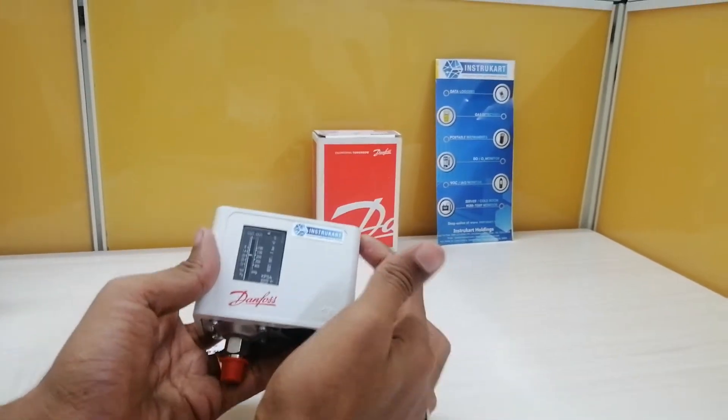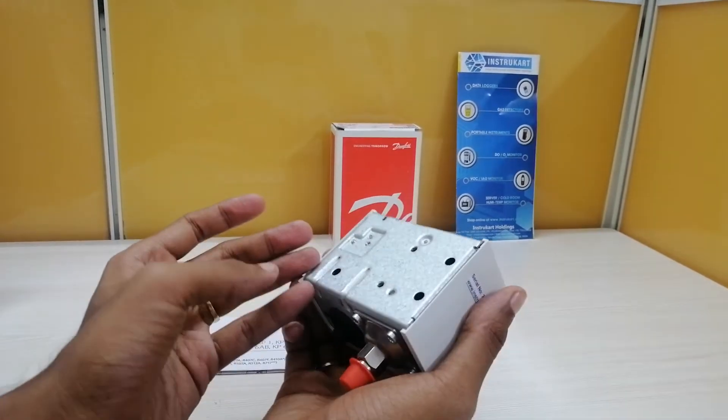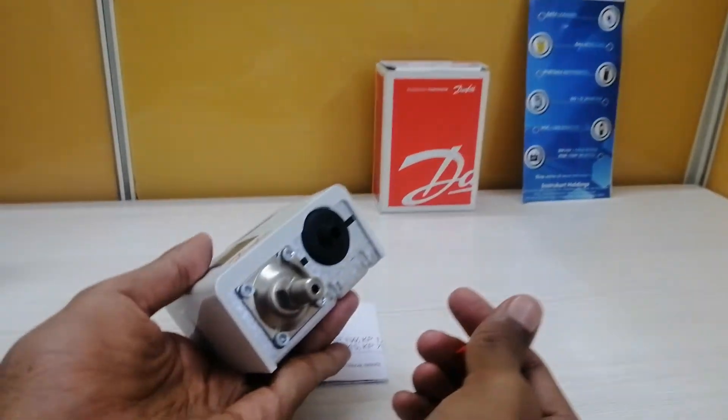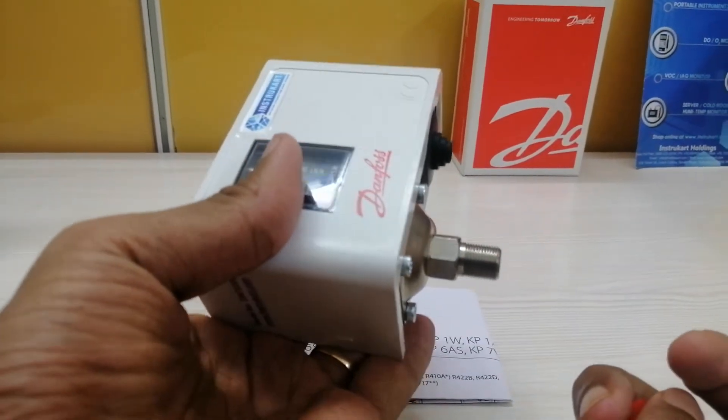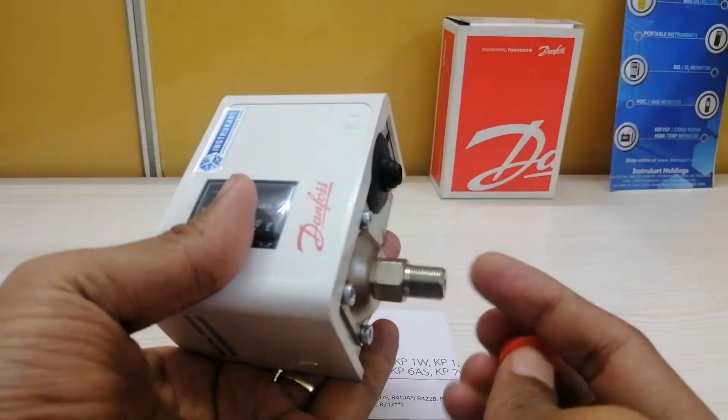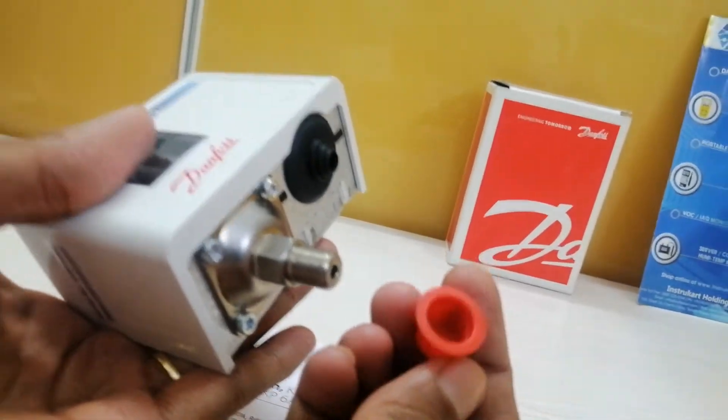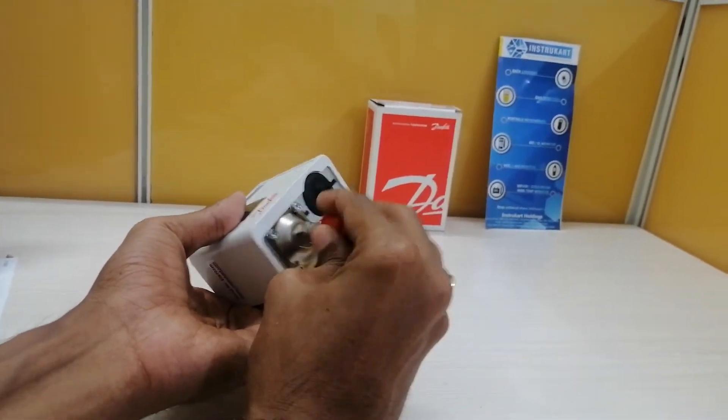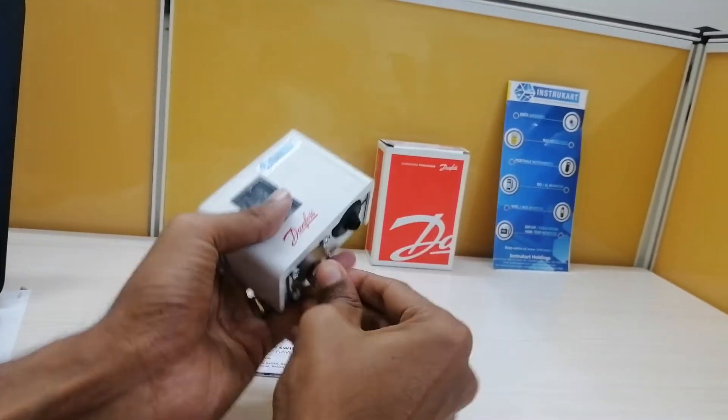The length of this instrument is approximately 5 inches. As you can see here at the bottom of the instrument, there is the connection, which is of 1 by 4 BSP, and it is known as bellow. Here is the protection cap for this particular bellow so that particles don't go inside this connection.